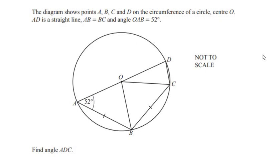Hello and welcome to my channel. In this video we are going to solve an example on circle theorems. The diagram shows points A, B, C and D on the circumference of a circle with center O. We can see that there are four points A, B, C and D on the circle. AD is a straight line.